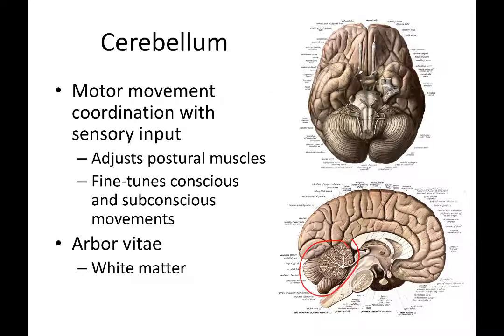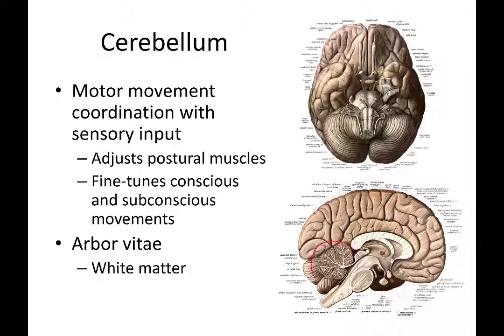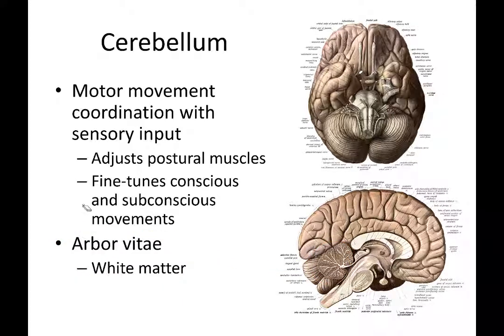The cerebellum is located on the posterior side of the brain. It has a different texture from the cerebrum — very fine lines rather than large folds. The white lines inside the cerebellum are known as the arbor vitae, meaning 'tree of life.' The role of the cerebellum is really about motor movement coordination, integrating motor output with sensory input.